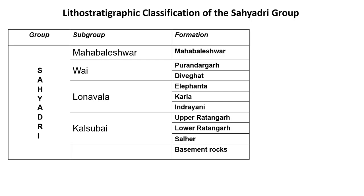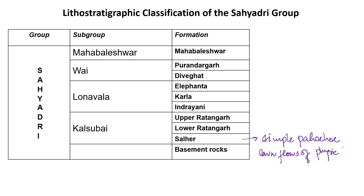The Salher formation consists of simple Pahoehoe lava flows of phyric to feldspar-phyric nature. In igneous rocks, the word 'phyric' is used as a replacement for 'porphyritic texture' — meaning the rock contains phenocrysts. Please revise what Pahoehoe lava flows mean if you are not familiar.